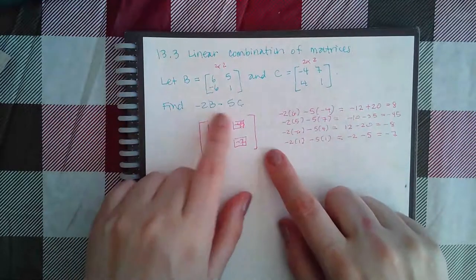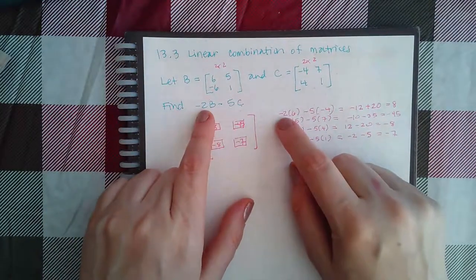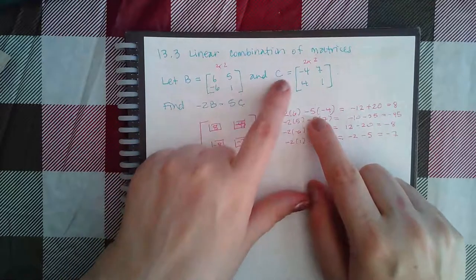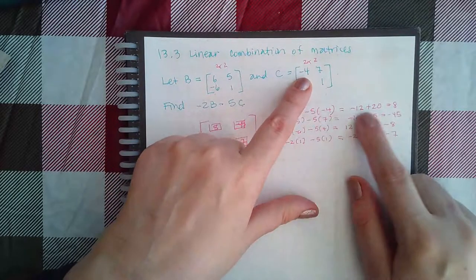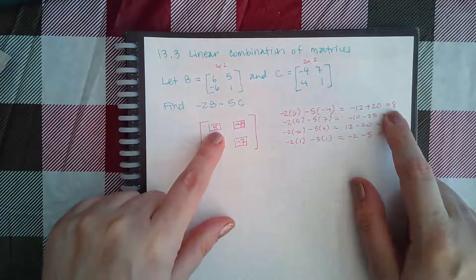And we're doing this linear combination of them. So negative two times the B entry minus five times the C entry. Do your computations and you get the new entry.